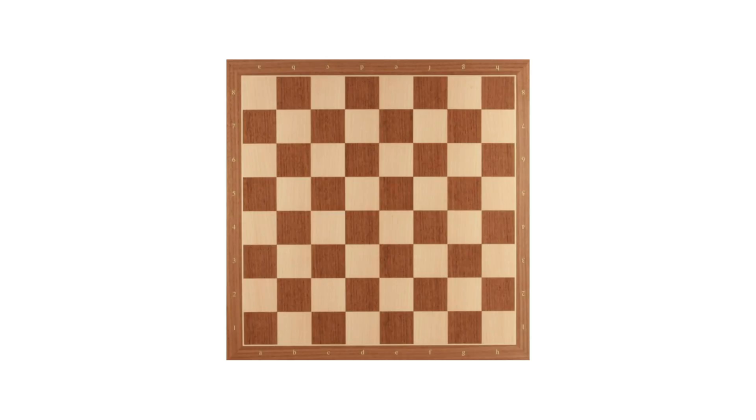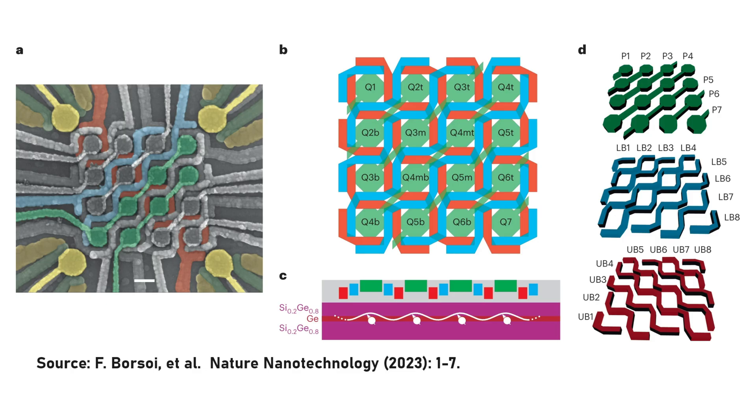A lot of pop science articles have compared this to a chessboard. And if you look at their device, it does kind of look like a chessboard, right? So kind of like how you define a position in chess by using a letter and a number, you can control a specific qubit on this chessboard-style quantum device by applying voltages to the top and left lines.